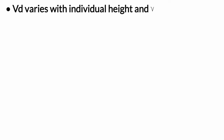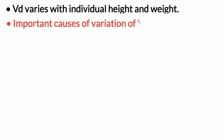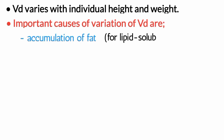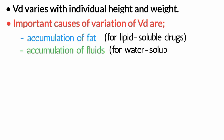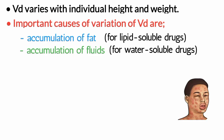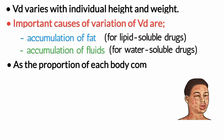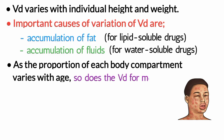VD varies with individual height and weight. The most important causes of variation of VD are accumulation of fat for lipid-soluble drugs, such as for obese patients, or accumulation of fluids for water-soluble drugs, such as ascites, edema, or pleural effusion. As the proportion of each body compartment varies with age, so does the VD for most drugs.